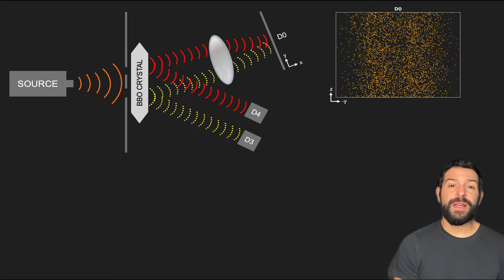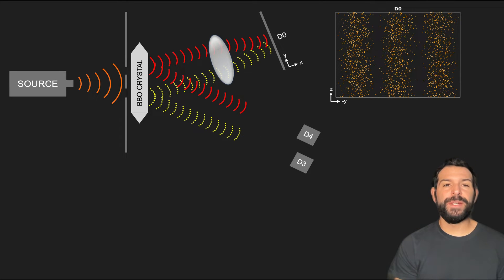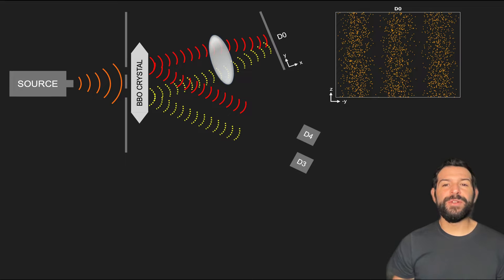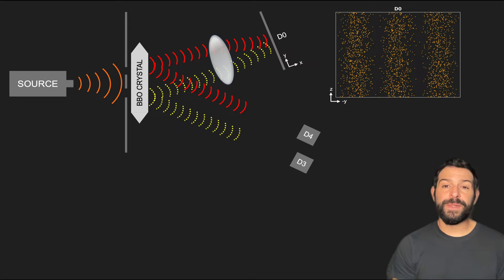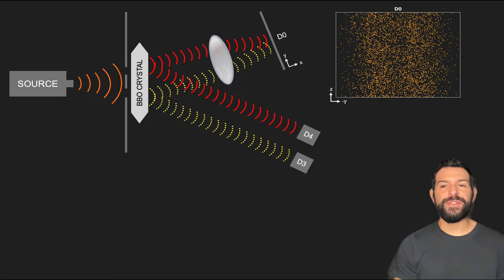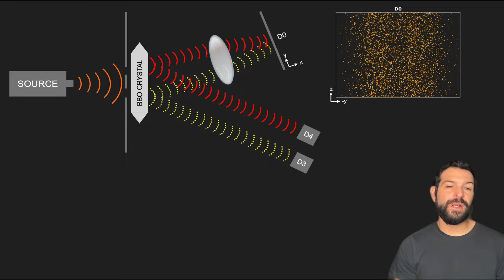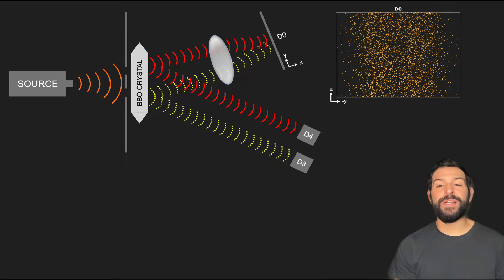It is then claimed that if we were to delay the measurement of the information photon, allowing the screen photon to reach D0 first, its landing position will still be determined by the interference of its wave function. And once a measurement to find which slit the photon went through is performed, the landing location on the screen would have to retroactively change to a position determined by a single slit wave. This is because it is never possible to both know which slit a particle went through and simultaneously have it interfere with itself.